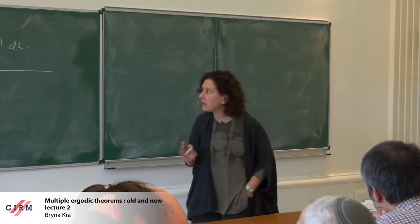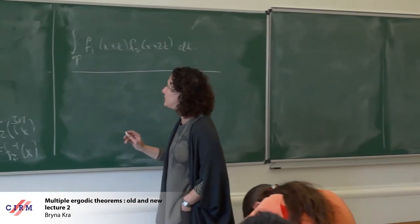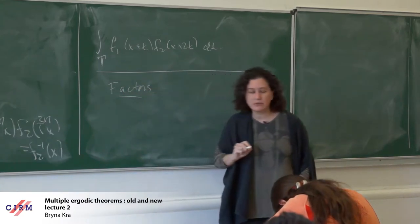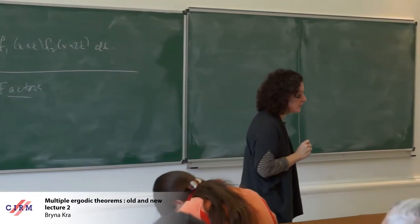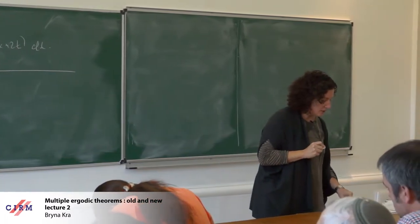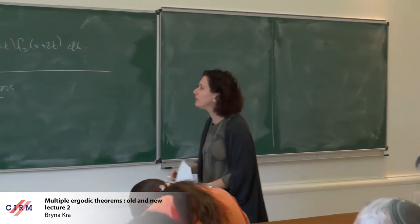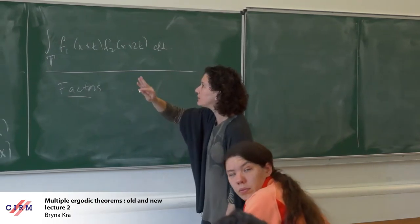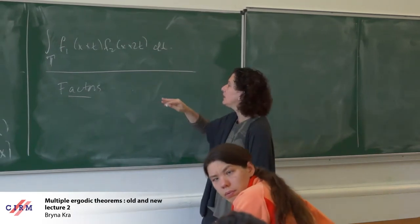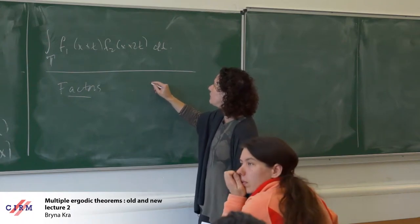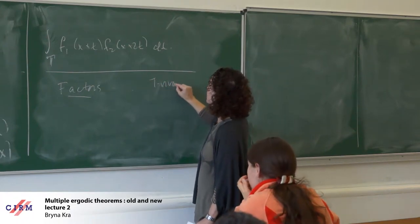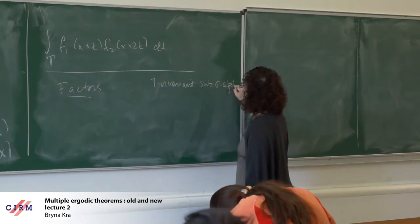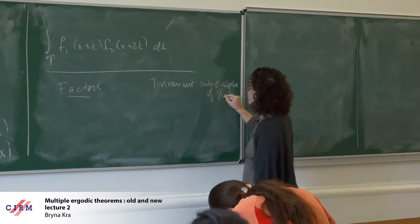Let me spend one minute on factors. My system is X always with the sigma algebra, curly X, mu, T, and I want to view a factor as a T-invariant sub-sigma algebra of this.